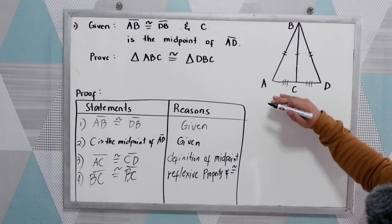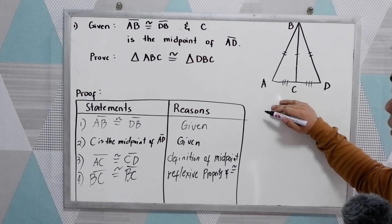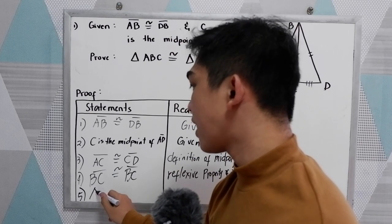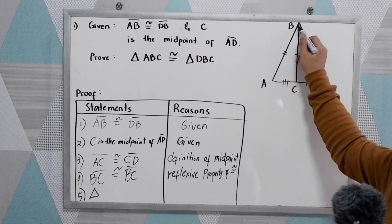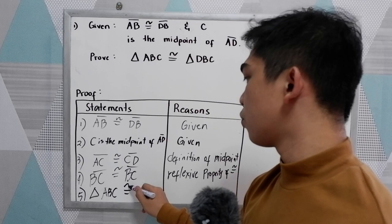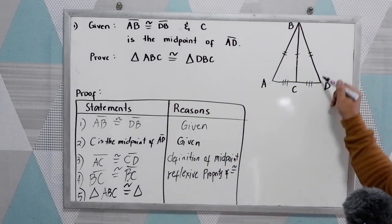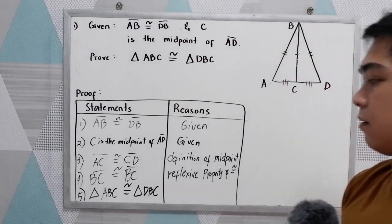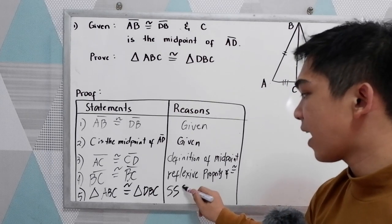Now, study our illustration. We can say that triangle ABC is congruent to triangle DBC. And to conclude that, we can apply our SSS postulate.